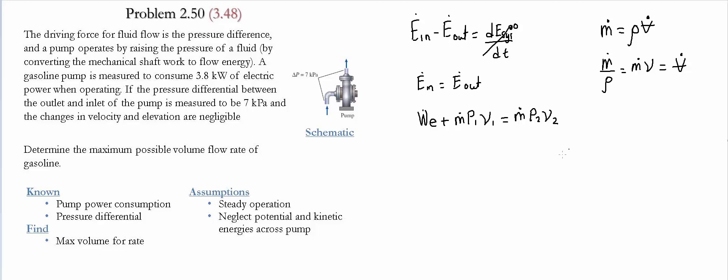We'll replace these quantities in the equation, giving us: electrical power plus volume flow rate times pressure one equals volume flow rate times pressure two. Notice that we assume the specific volume at point one and point two are equal to each other.